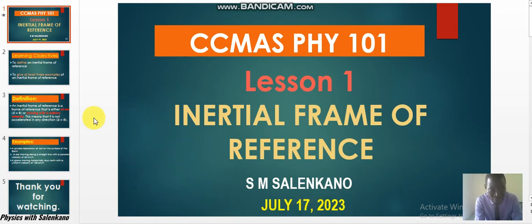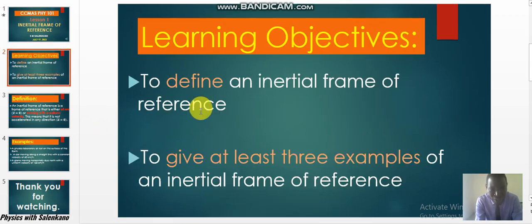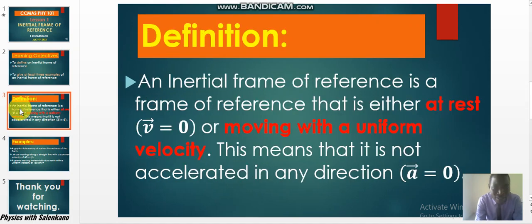As quickly as possible, what are our learning objectives? We have just two learning objectives. The first one is to define an inertial frame of reference. And the second one is to give at least three examples of an inertial frame of reference.